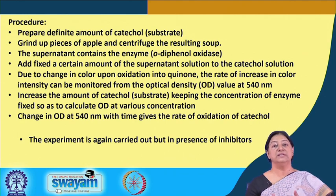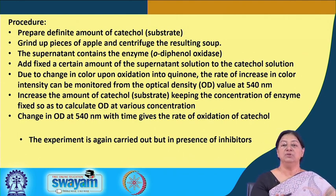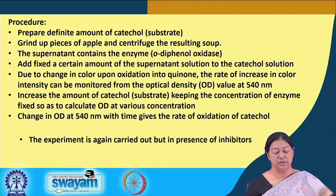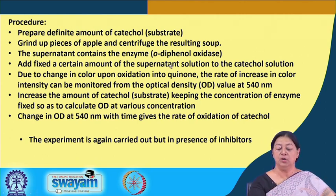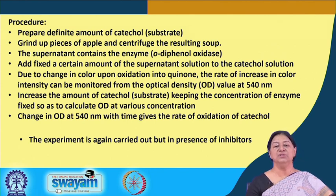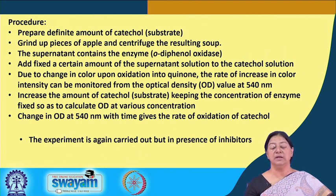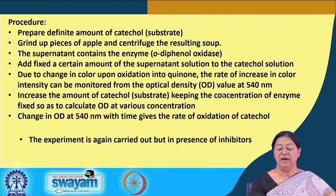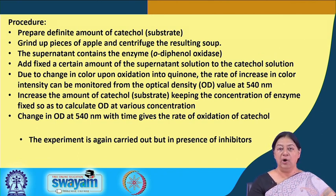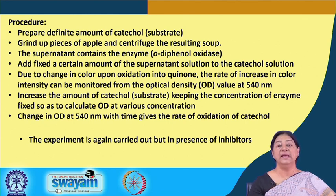The experiment involves preparing a definite concentration of catechol solution, grinding up pieces of apple to produce the enzyme solution. The enzyme present is called ortho-diphenol oxidase. The enzyme is mixed with the substrate, and as the dark colored product forms, it is monitored spectroscopically — measuring the optical density, i.e., the absorbance value at 540 nanometers — to track browning over time.